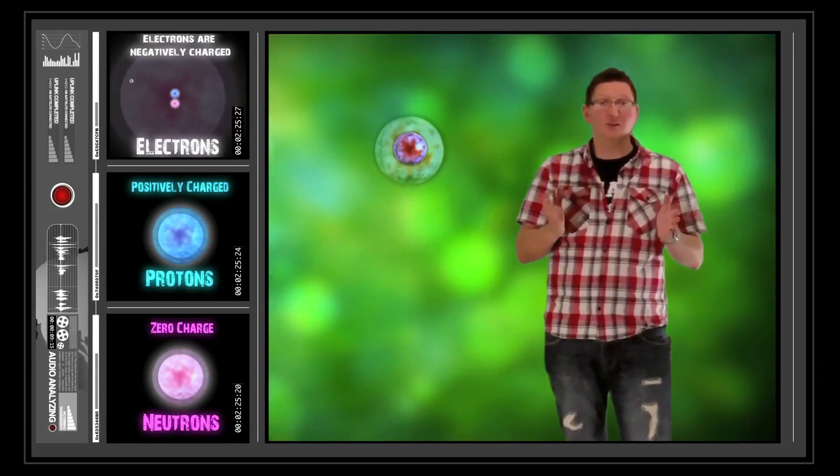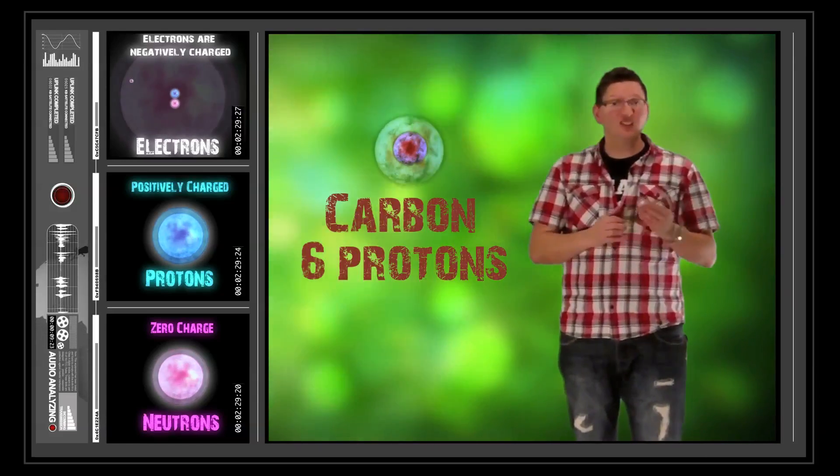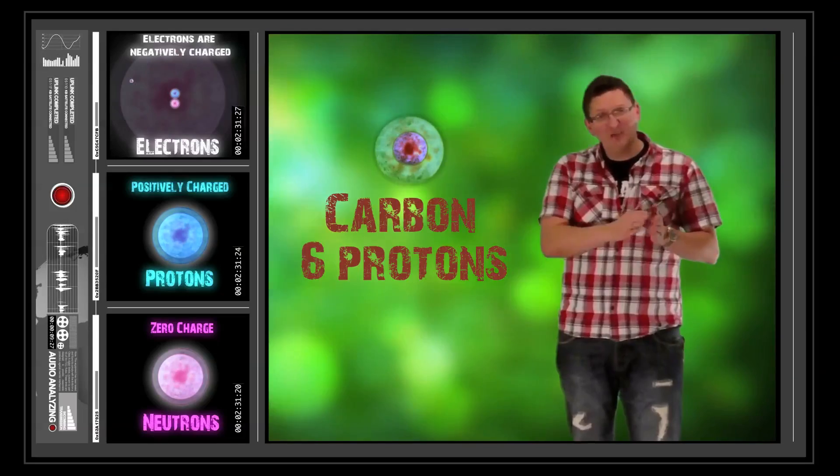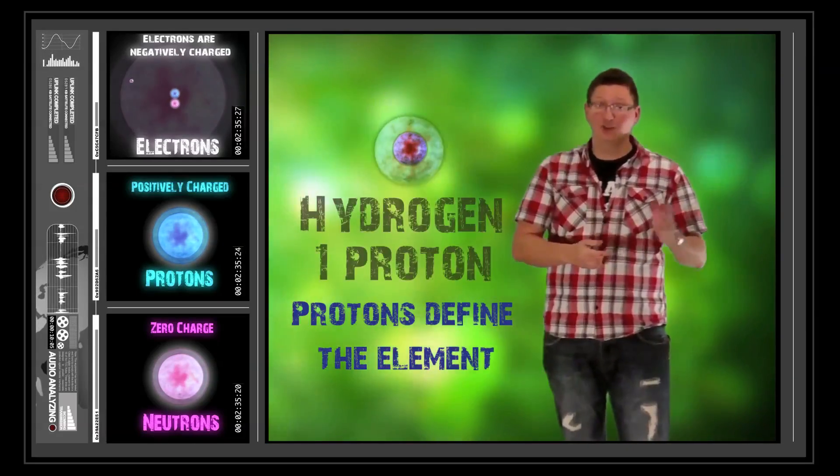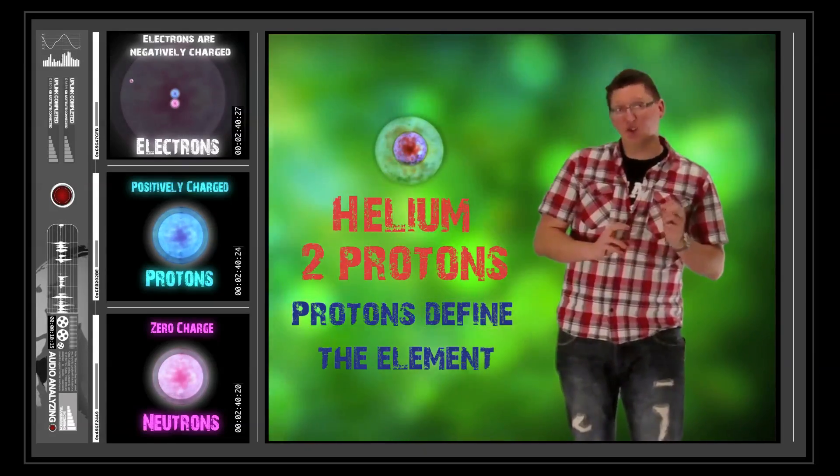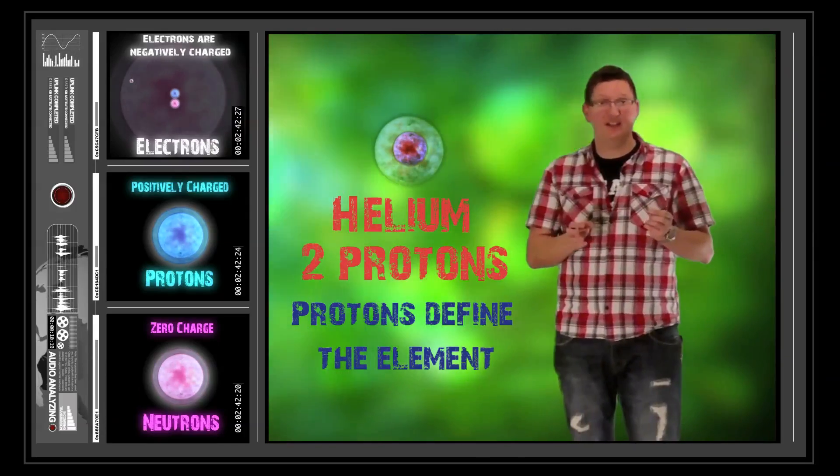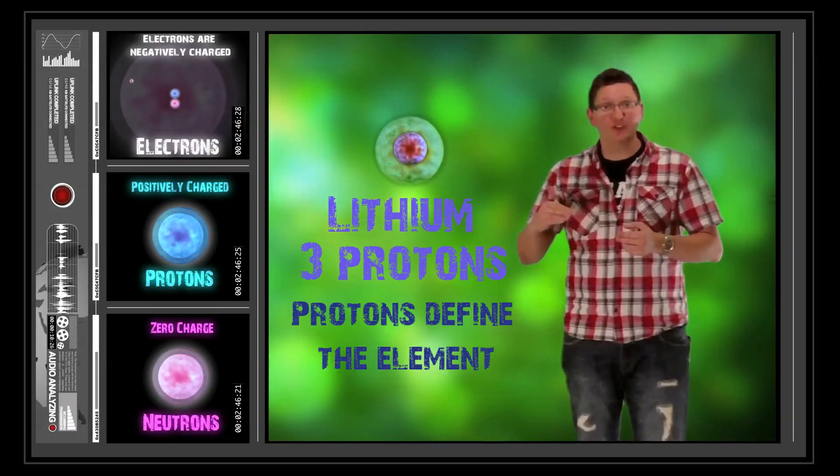If we look at something like carbon, in carbon's nucleus, it's got 6 protons. And the protons are actually what define the element. So if we look at hydrogen, it's got 1 proton. So it's called hydrogen atom. If we look at helium, it's got 2 protons. So we call it helium. Lithium has got 3 protons and so on.